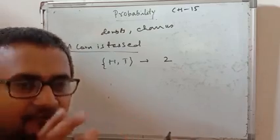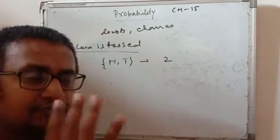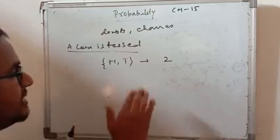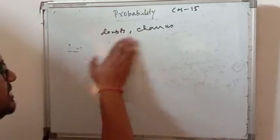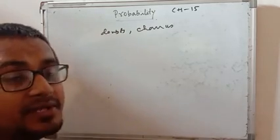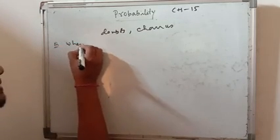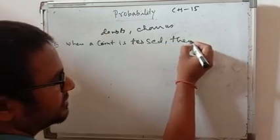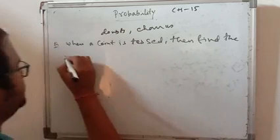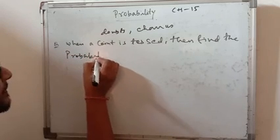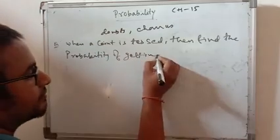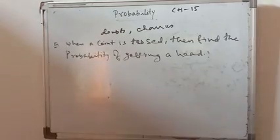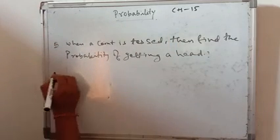In probability, an event means an incident — for example, tossing of a coin, throwing of a dice. If you shuffle a deck of 52 cards, you know there are four groups: jack, clubs, heart, and diamond — that also comes under probability. Now a simple question: when a coin is tossed, find the probability of getting a head.